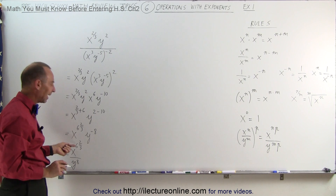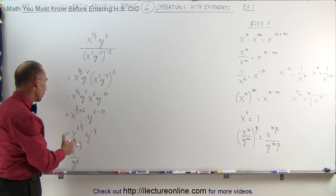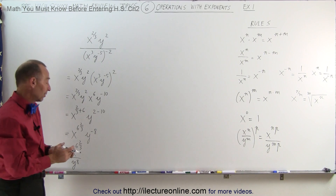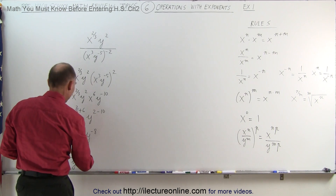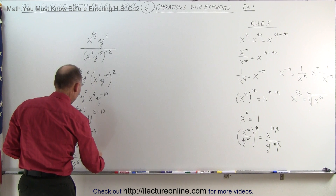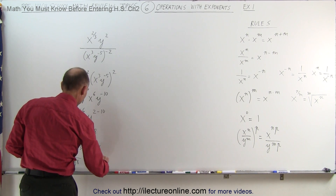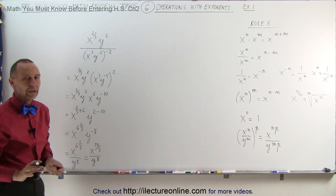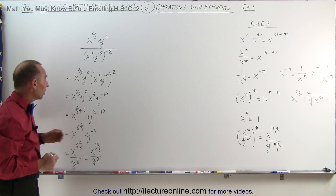Now, you may not like six and two-thirds as a mixed number. You could write that as 20 over 3: 6 times 3 is 18, plus 2 is 20, so x to the 20 over 3 power divided by y to the 8 power. Either way, the answer is correct and you can leave it in either form. That's how we get to this point.